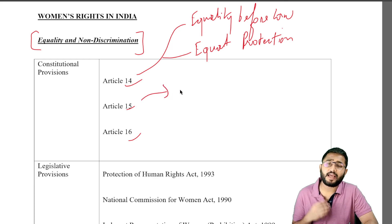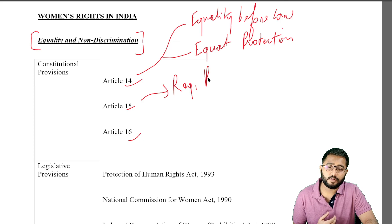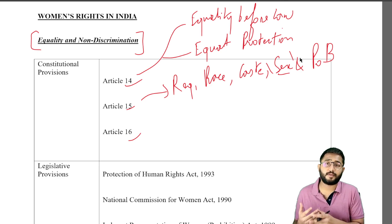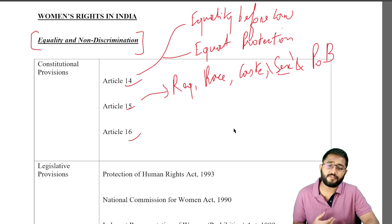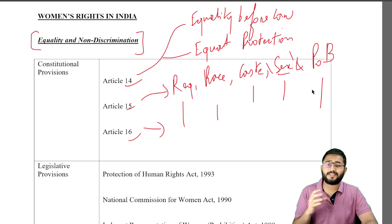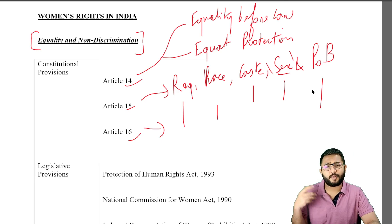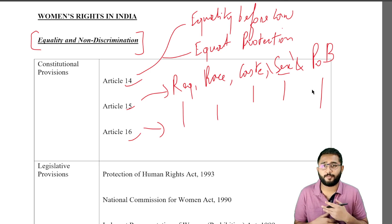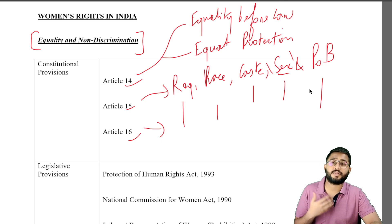Similarly, Article 15 says very categorically that the state shall not discriminate any person on the basis of religion, race, caste, sex, and place of birth. Sex is categorically mentioned, which means you cannot discriminate between a man or a woman. Article 16 mentions that in terms of public employment, the state cannot discriminate on the basis of religion, race, caste, sex, and place of birth. The DPSPs also have provisions saying you cannot discriminate against any person, which includes non-discrimination against women.